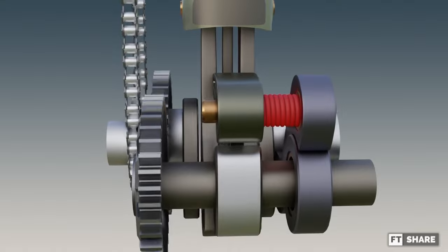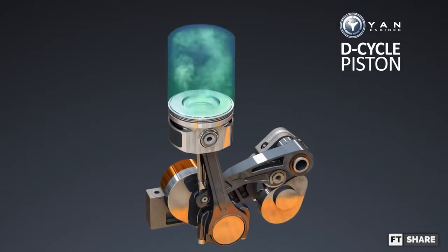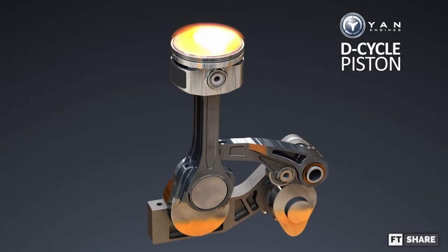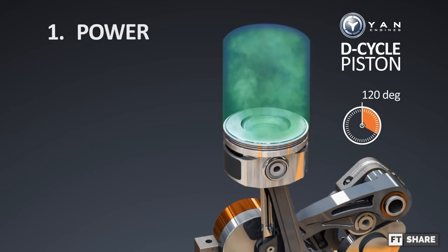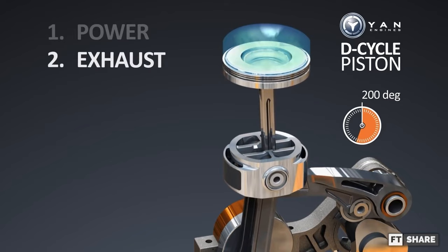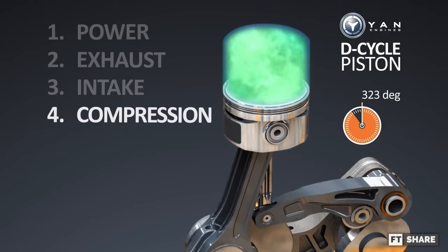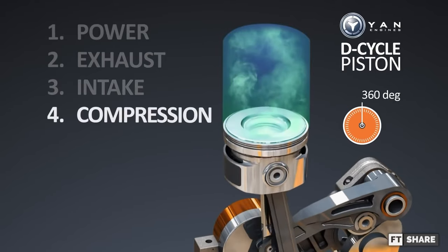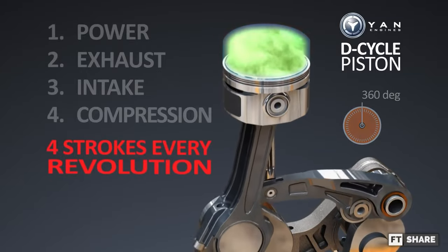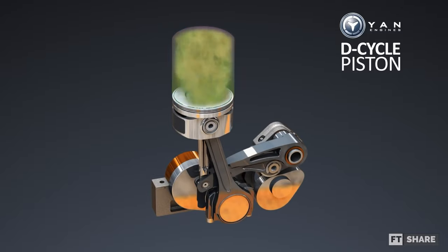Now let's move on to the working system. The working system is unique because it is different from 2 and 4 strokes. As we can see, for the power process to occur as much as 120 degrees crankshaft. After that, it continued with the exhaust process, which occurred suddenly because of the push from the D-cycle crankshaft, as much as 80 degrees crankshaft, then intake as much as 65 degrees crankshaft, and compression as much as 95 degrees crankshaft until it reaches a point of 360 degrees, and the power cycle repeats itself. So that's it for the working system of the D-cycle engine.